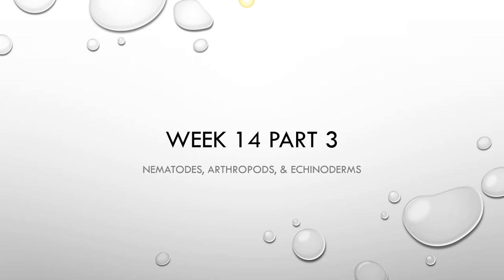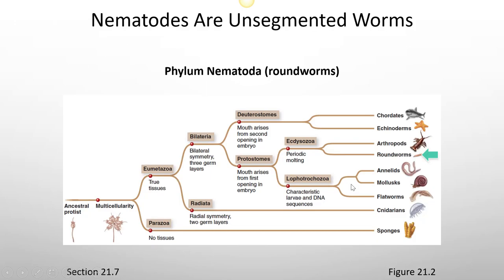Continuing on through the nine phyla, we're going to talk about nematodes, arthropods, and echinoderms. We're at the echinoderms and the arthropods here.